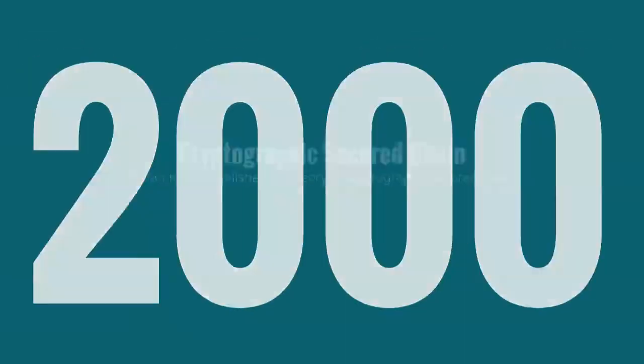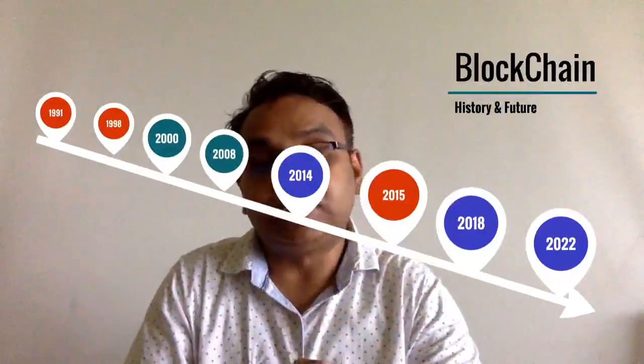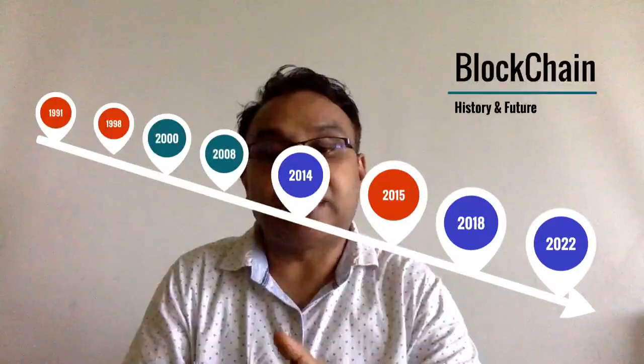Let's see what happened in 2008, which is considered a specific turning point in the time of blockchain. Having seen the journey from 1991 to 2000, which already gave the major concepts and a secured chain of blocks, in 2008 Satoshi Nakamoto — whose true identity is unknown, whether a person or group — released a paper and introduced the term Bitcoin, the first digital cryptocurrency and the first blockchain platform.